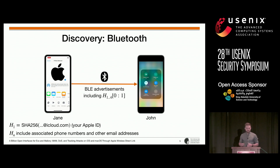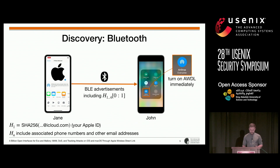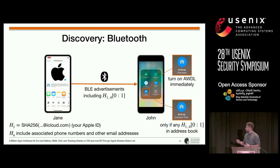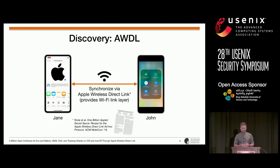On the other end, the AirDrop-enabled receiver device, which I will call John throughout this talk, regularly performs scans for those advertisements. If John receives any advertisement and is set to be discoverable by everyone, it will immediately turn on its AWDL interface. If John makes himself discoverable by contacts only, it will first check whether any of the hashes matches an entry in its own address book. Now both devices have turned on their Wi-Fi interface and conduct the synchronization procedure of AWDL, which creates a wireless direct link between the two devices.